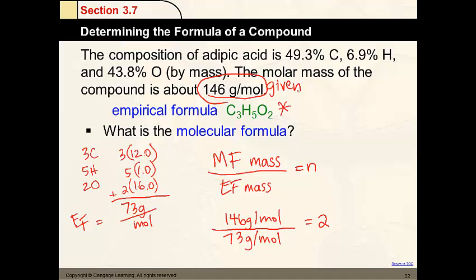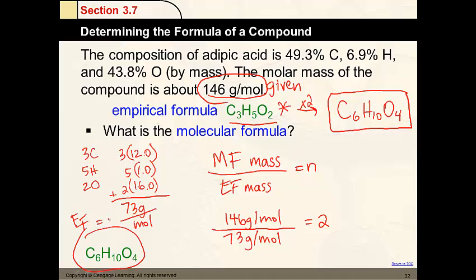So that means that we take our empirical formula, which we have right here. We're going to take that times 2. So we're going to get C6H10O4. And that's the final answer for this example.